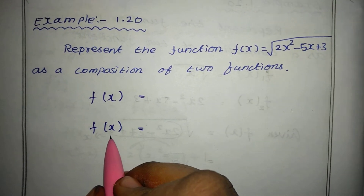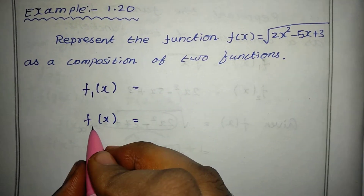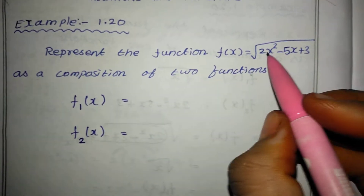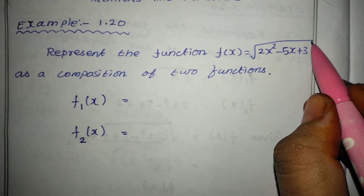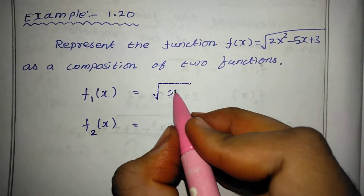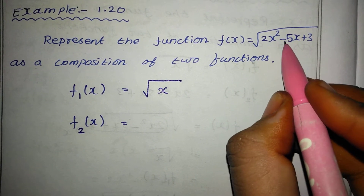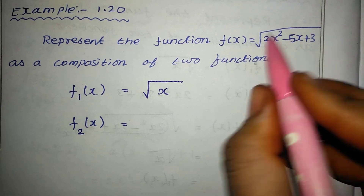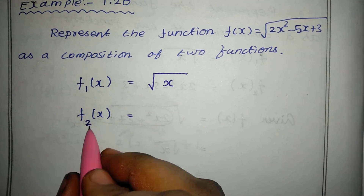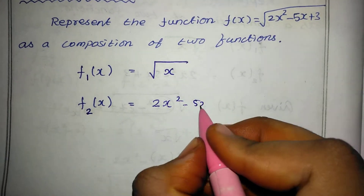If we identify the value here and we are confused, we can identify this one and we can add two functions — we can add a root as one function. Second, we can add 2x squared minus 5x plus 3 as f2 of x.